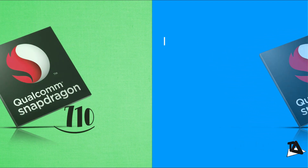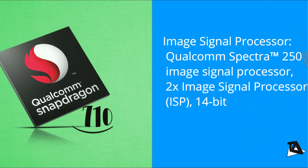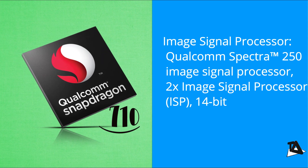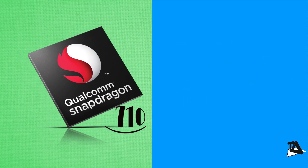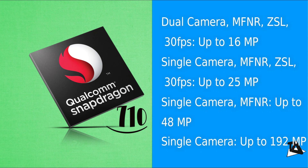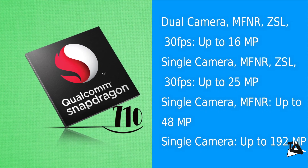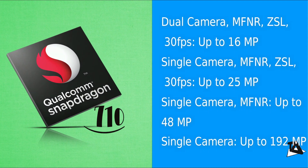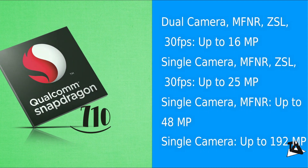The Spectra 250 ISP found in Snapdragon 710 enhances low-light images and can support a single 25-megapixel sensor or dual 16-megapixel sensors. There is also support for a 48-megapixel single camera with zero shutter lag, as well as a 192-megapixel single camera.